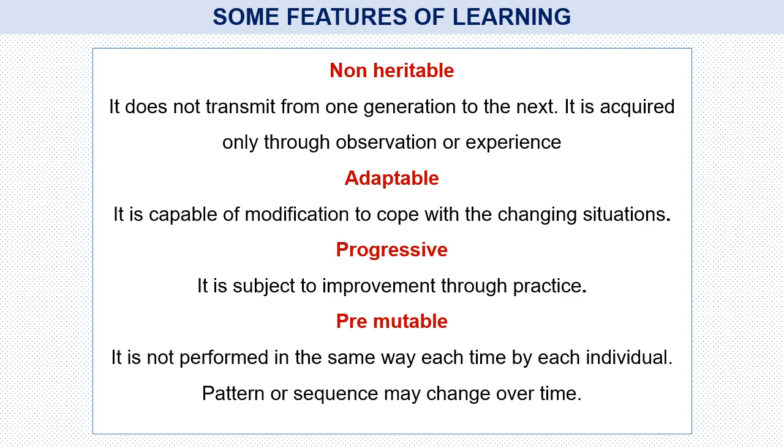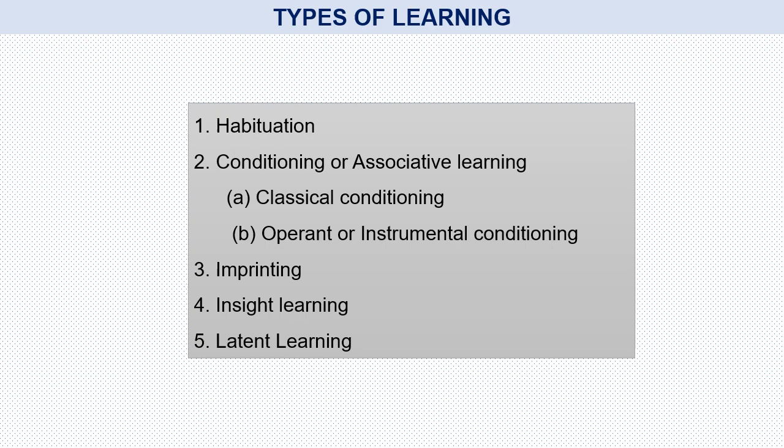There are different types of learning. In this presentation, I will discuss each type with examples. Number one: habituation. Number two: conditioning or associative learning, which may be classical conditioning or operant/instrumental conditioning. Number three: imprinting. Number four: insight learning.